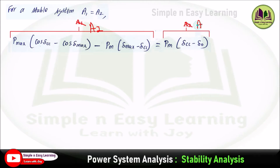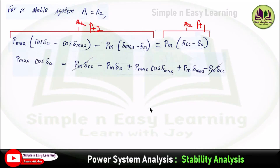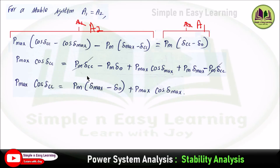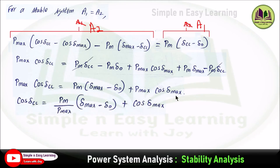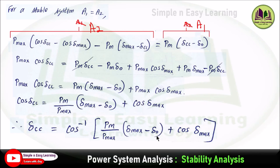For a stable system, A1 = A2. Equating the two areas and simplifying: P_m × (del_cc − del_naught) = P_max × (cos(del_cc) − cos(del_max)) + P_m × (del_max − del_cc). The P_m × del_cc terms cancel, leaving: P_max × cos(del_cc) = P_m × (del_max − del_naught) + P_max × cos(del_max). Solving for del_cc: cos(del_cc) = (P_m / P_max) × (del_max − del_naught) + cos(del_max). Therefore, del_cc = cos⁻¹[(P_m / P_max) × (del_max − del_naught) + cos(del_max)], where del_cc is the critical clearing angle.